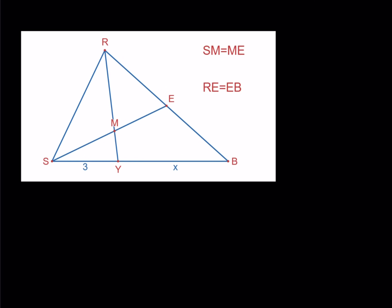So we have triangle SRB, E is on RB, Y is on SB, M is on RY and SE. We're also given that SM equals ME and RE equals EB. So these are midpoints. That's a midpoint and that's also a midpoint. So let's go ahead and start with our first method.